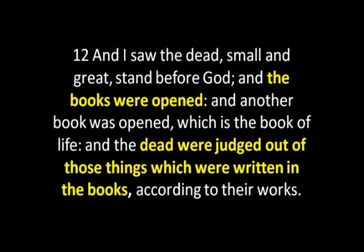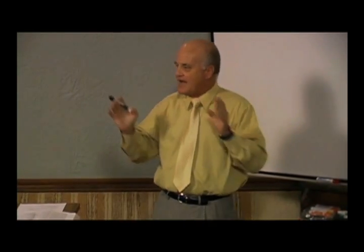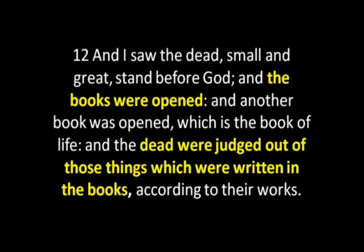'And the dead were judged out of those things which were written in the books, according to their works.' That book of life is set off — 'books,' then 'another book was opened, which is the book of life,' and then it returns back to the books to say 'the dead were judged out of those things which were written in the books.' That means everything that has ever been done. This takes place at the great white throne judgment.